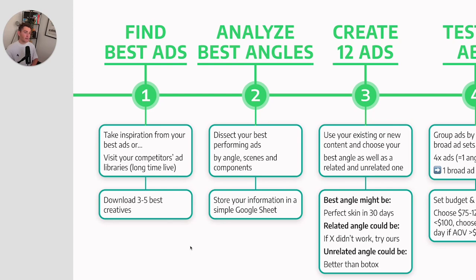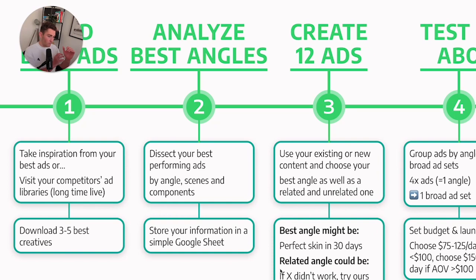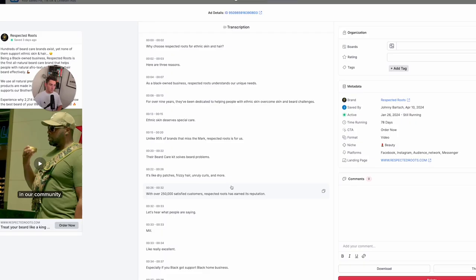In step two, what we're doing is we dissect these ads. I recommend you go after video ads — you can do image ads, it's the same process basically. With video ads, you go from the beginning to the end, you break down the angles, the scenes, and the components of the video to understand why it's working. Because there is something in this video — even if it looks stupid to you — if it's crushing, you need to find out why. That is actually in the components that this video ad is containing.